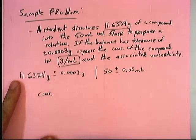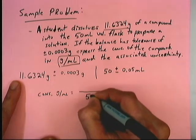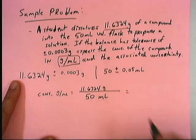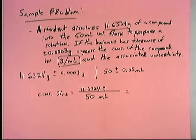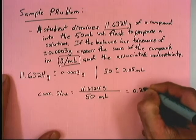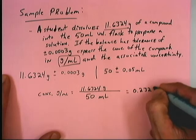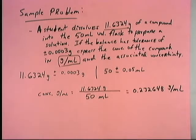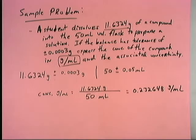Since we want the concentration in grams per milliliter, we take grams divided by milliliters: 11.6324 divided by 50. Keeping all significant figures, that gives 0.232648 grams per milliliter. That's the approximate concentration, but right now I know absolutely nothing about the uncertainty. I need to propagate the uncertainty through the computation, otherwise I don't know how precise it is or how many digits to report.